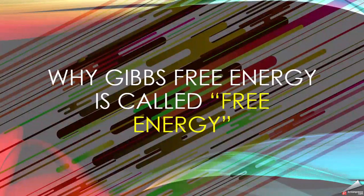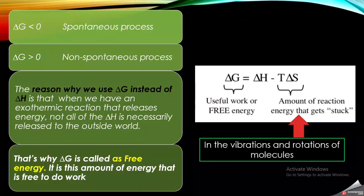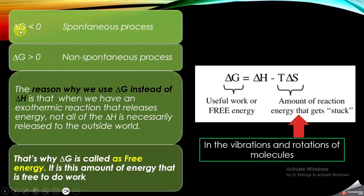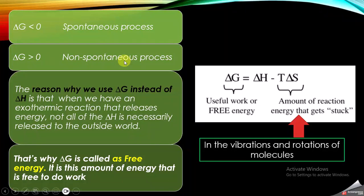Hello students. In this video I am going to show you why Gibbs free energy is called the free energy. We all know that Gibbs free energy is used to define whether a process is spontaneous or non-spontaneous. If delta G is less than zero or negative, the process is spontaneous, and if delta G is greater than zero or positive, the process is non-spontaneous.